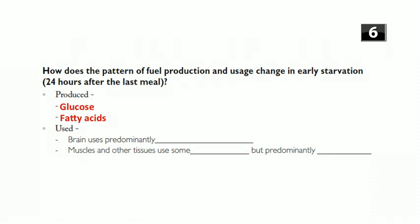What fuels your body uses in early starvation depends on the tissue. The brain uses predominantly glucose — it's very specialized and really prefers glucose more than anything else, though it can use ketone bodies. Muscles and other tissues use glucose sometimes, but predominantly use fatty acids. The rest of the body goes to fatty acids as a secondary energy source much more readily than the brain will.